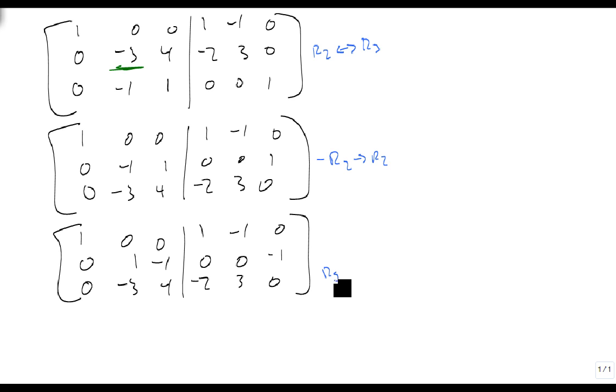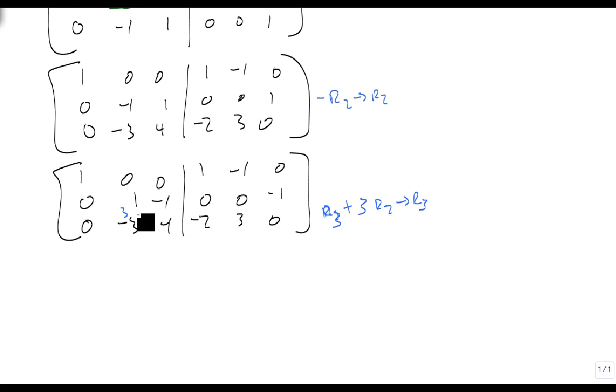Now we take row 3 and add 3 times row 2 and we'll store that in row 3, so that gives me 3, minus 3, 0, 0, minus 3. So this gives me 1, 0, 0, 1, minus 1, 0, 0, 1, minus 1, 0, 0, minus 1. And 0, 0, 1, minus 2, 3, minus 3.